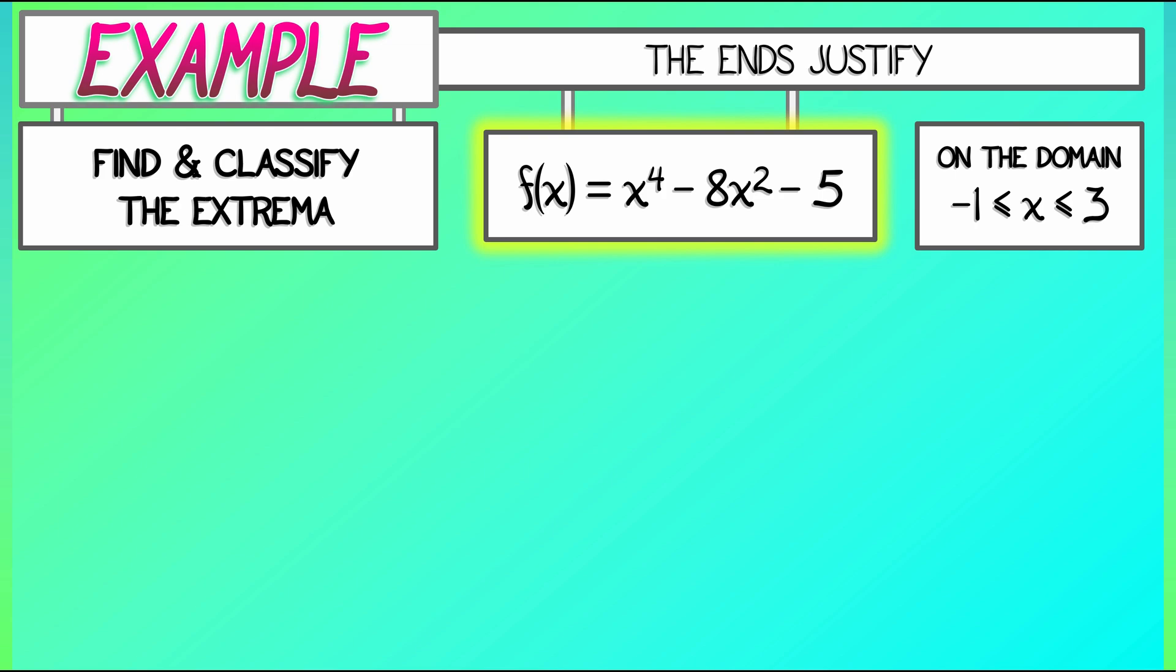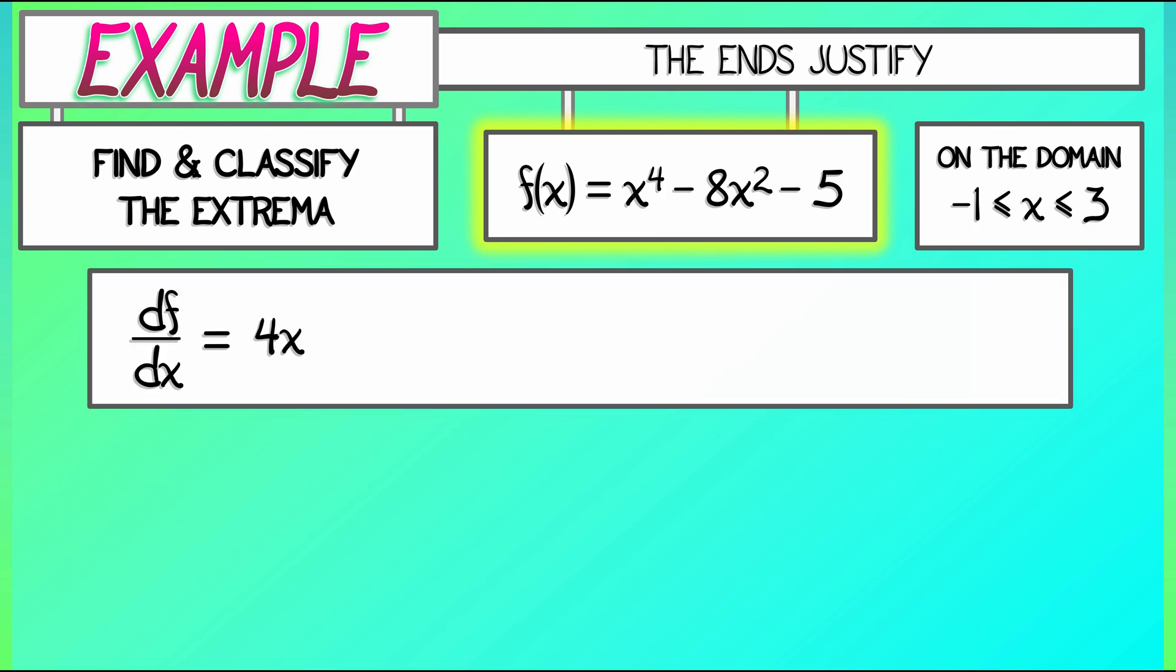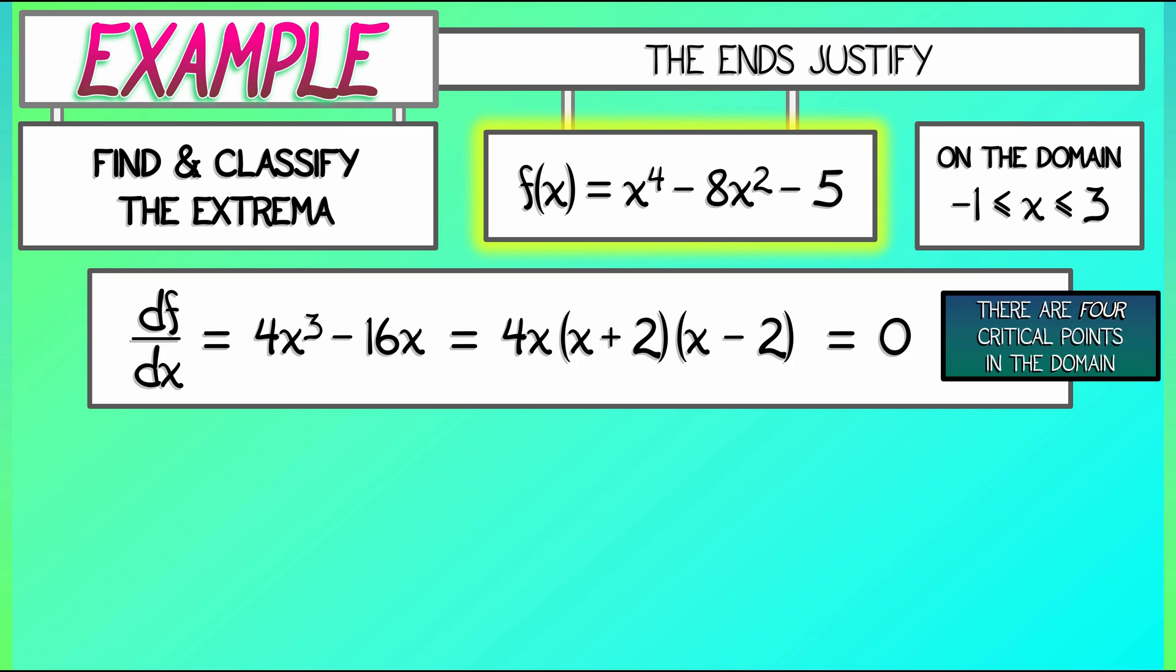Now, we've already done this problem. We've already computed the derivative to be 4x cubed minus 16x, which factors as 4x times x plus 2 times x minus 2. If you set that equal to zero, then what have we got? How many critical points do we have? There's actually four critical points now, not three like before. We still have critical points at x equals 0 and x equals 2 that are within this domain. Negative 2? No longer there.